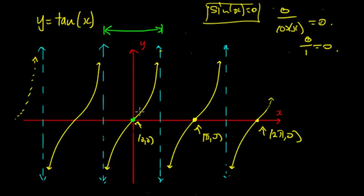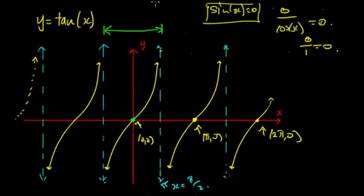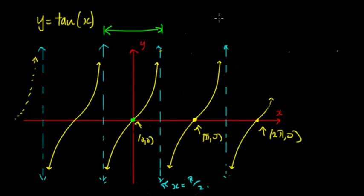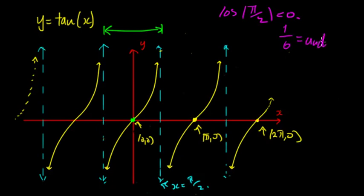Then the graph starts to increase. The reason is we're in the first quadrant, where both sin x and cos x are positive, so tan will be positive. This keeps going higher and higher as it approaches x = π/2, because sin x becomes larger while cos x becomes smaller, making the ratio larger and larger. There's an asymptote at x = π/2 because cos(π/2) = 0, making tan x = 1/0, which is undefined. So tan x cannot exist when cos x = 0.